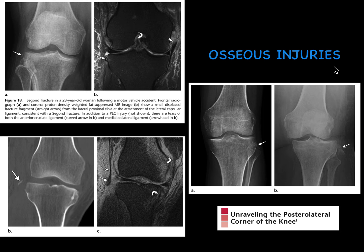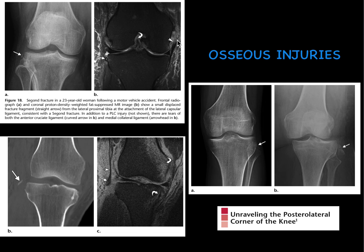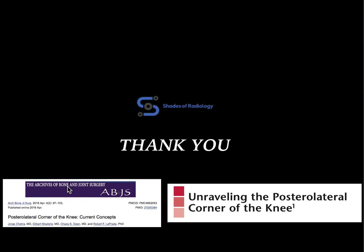These are the osseous injuries we need to remember that indicate a possible posterolateral corner injury. Most are aware of the arcuate sign — you can see the fibular fracture at the proximal end, and here a large osseous avulsion body, which always suggests a complex injury of the posterolateral corner anatomy. In the presence of a Segond fracture, always look for the posterolateral corner anatomy. There is also disruption of the medial and lateral collateral ligaments visible here. Another finding is the Gerdy's tubercle fracture, and you can see a tear along with contusions involving medial structures as well. Whenever these osseous injuries are present, always think of the posterolateral corner anatomy. Thank you all.